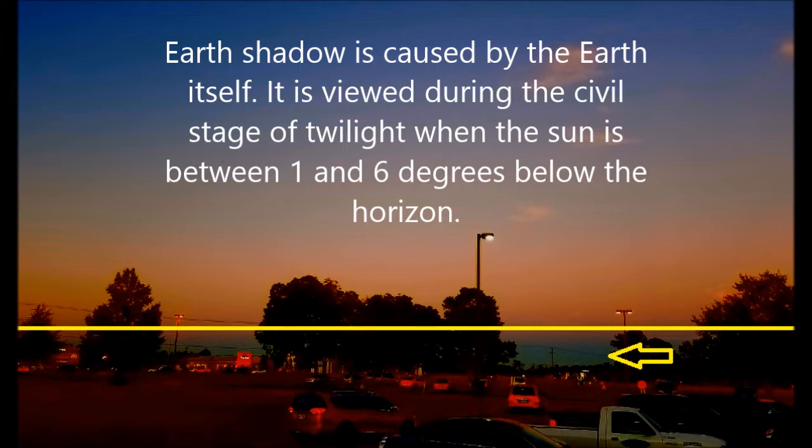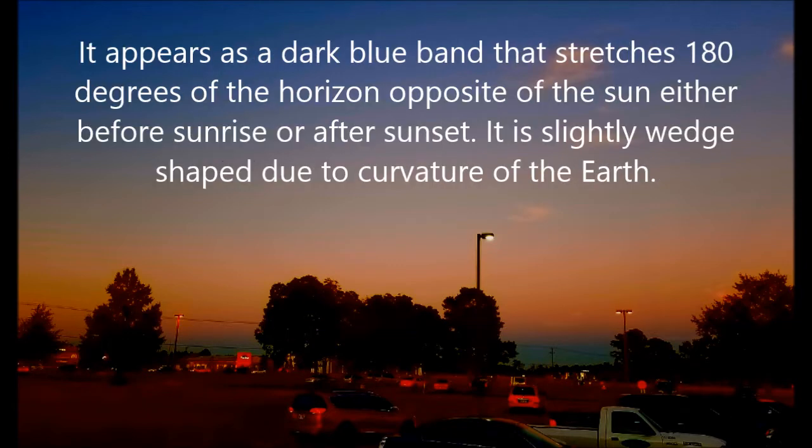Earth's shadow is caused by the Earth itself. It is viewed during the civil stage of twilight when the sun is 1 to 6 degrees below the horizon. It appears as a dark blue band that stretches 180 degrees of the horizon opposite of the sun, either before sunrise or after sunset. It is slightly wedge-shaped due to the curvature of the Earth.